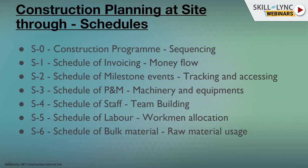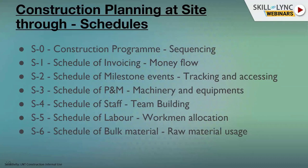To summarize: from the construction program, the sequence of activities is planned, money is fixed, machinery is planned, staff is planned, labor and plant and machinery and bulk material are all planned. This is the basic structure for site execution plans. As the project progresses, these are your guiding factors. There is a lot of elaboration inside each of these schedules, but this is the brief of how site operations work — sequence, money, resources: machinery, staff, team, labor force, and material.